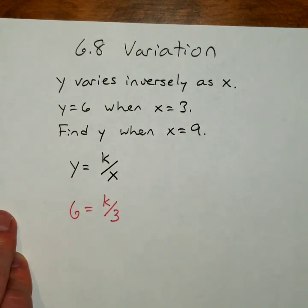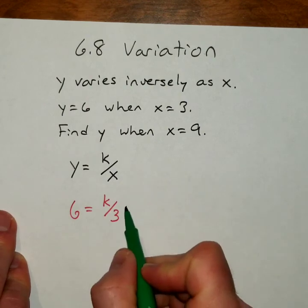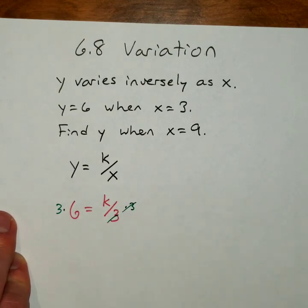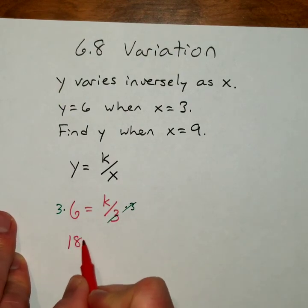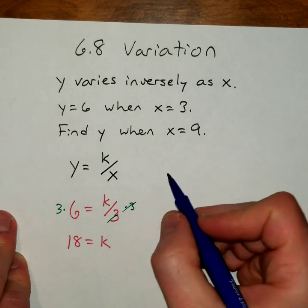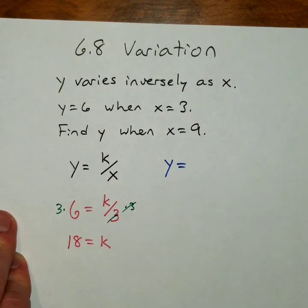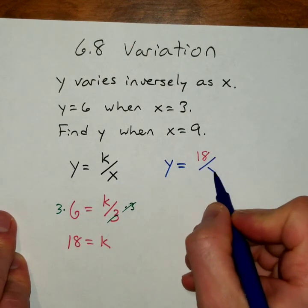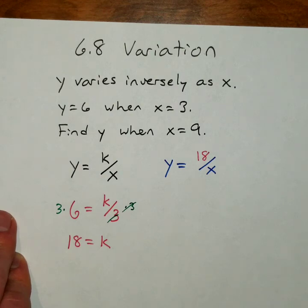All right. So now we're going to use the values that are given. We're going to say 6 is equal to our constant over, now x is 3. So we use the values given. And to solve for k this time, I've got to multiply both sides by that 3. So I'm going to multiply by 3. That cancels the denominator out. And I'm going to be left with 18 equals k. All right. So if 18 is our constant, we plug that back in.